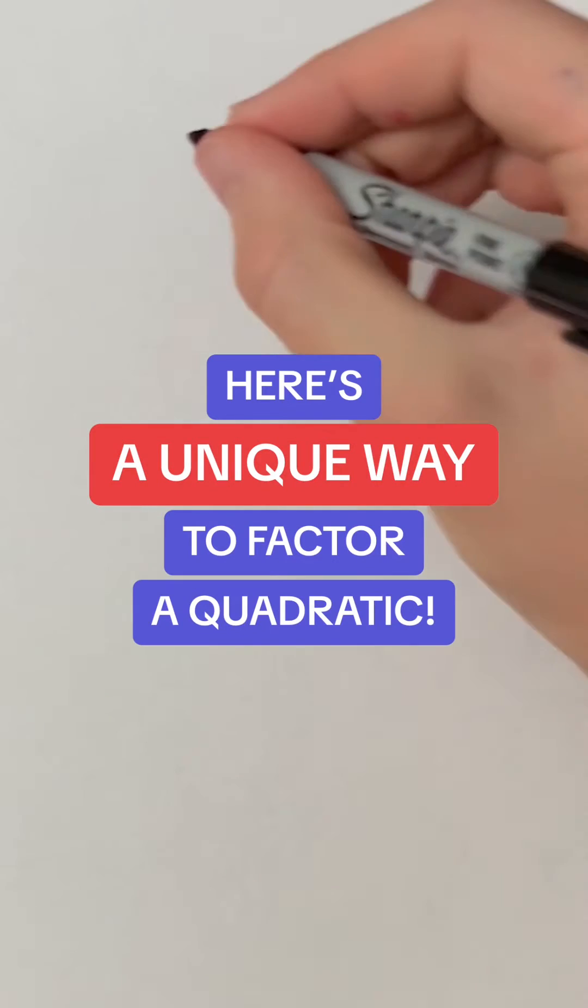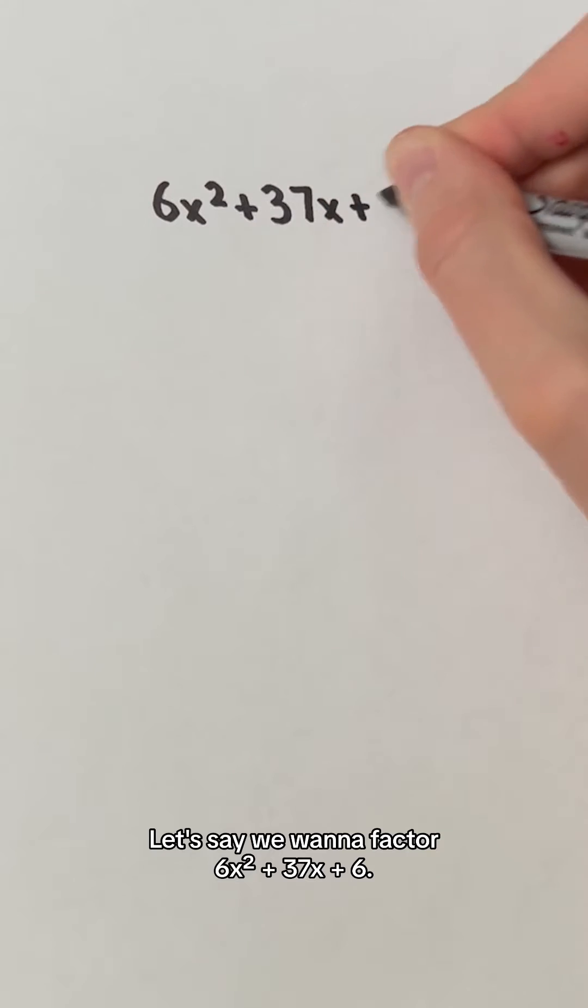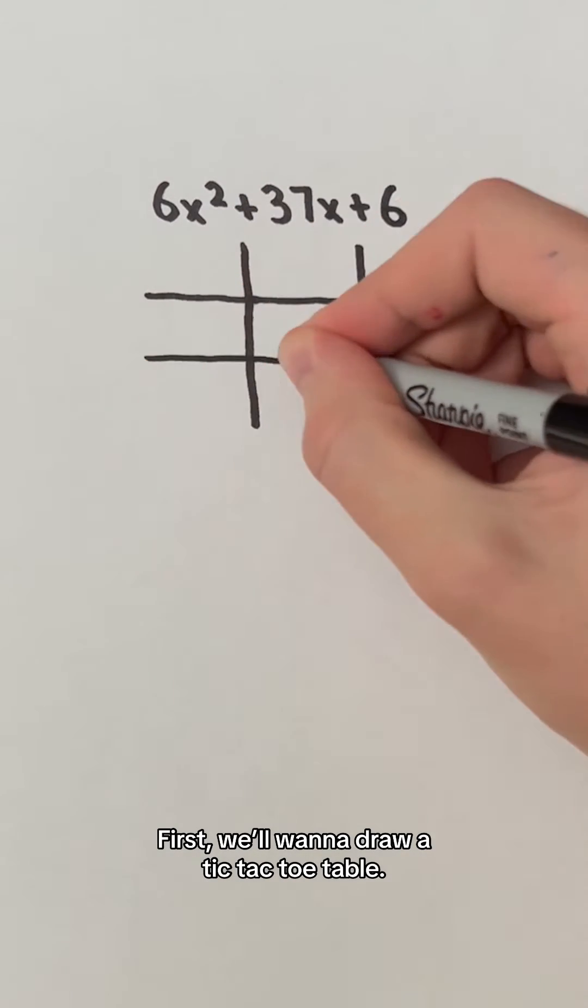Here's a unique way to factor a quadratic. Let's say we want to factor 6x squared plus 37x plus 6. First, we want to draw a tic-tac-toe table.